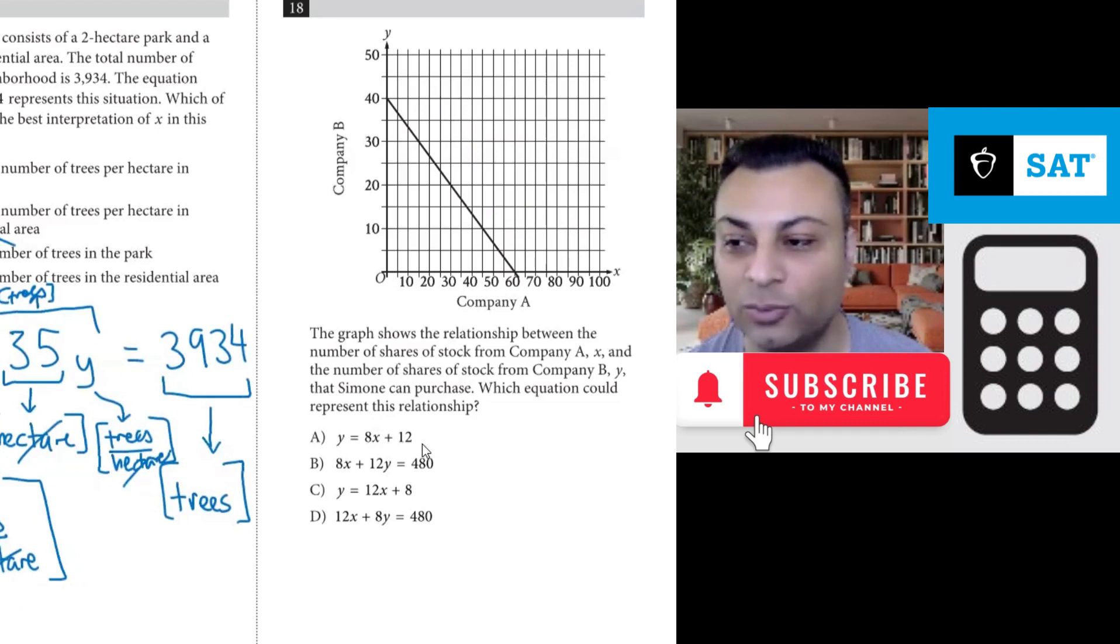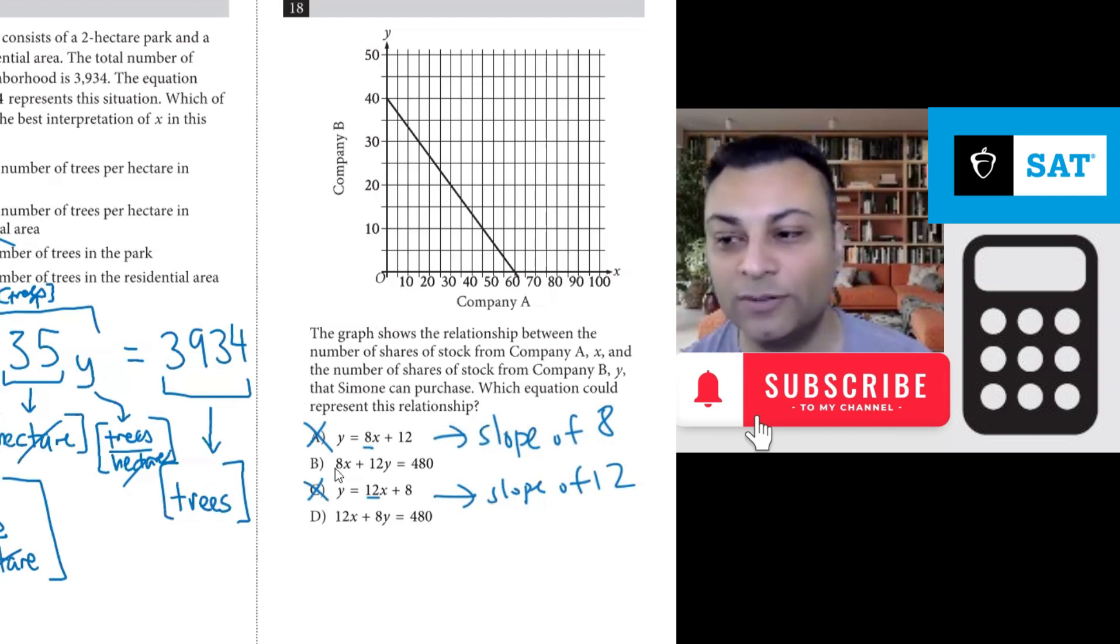Here, we have y equals 8x plus 12. That's a positive slope of 8, so that's not it. Here's y equals 12x plus 8, positive slope of 12, not it. But by that, I mean this line has a slope of 8, and this line has a slope of 12. And these are positive numbers, so this can't be it. So it's down to one of these two.